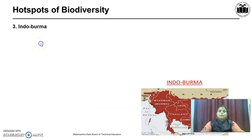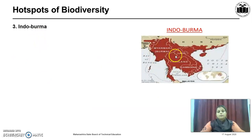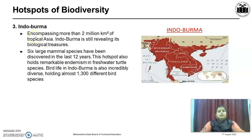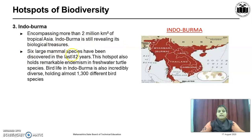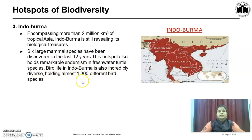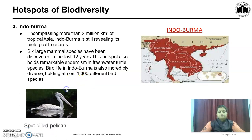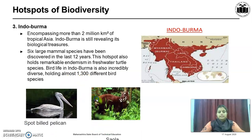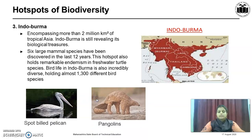The third important region is Indo-Burma. Encompassing more than 2,000,000 km² of tropical Asia, Indo-Burma is still revealing its biological treasure. Six large mammal species have been discovered in the last 12 years. This hotspot also holds remarkable endemism in freshwater turtle species. Bird life in Indo-Burma is incredibly diverse, holding almost 1,300 different bird species, including the spot-billed pelican, the saola, and the pangolin.